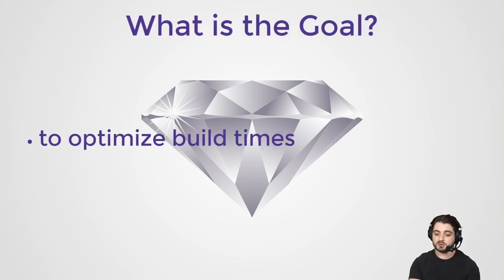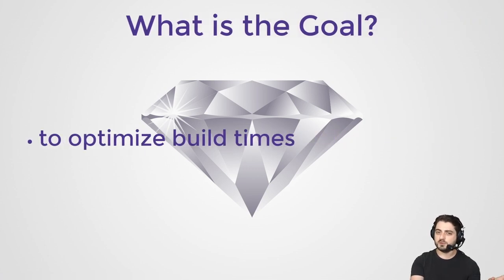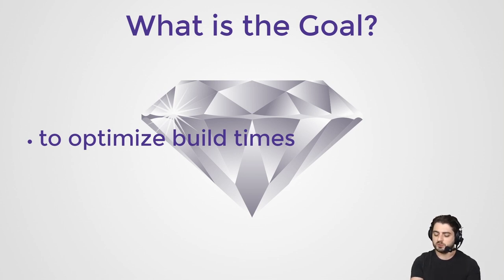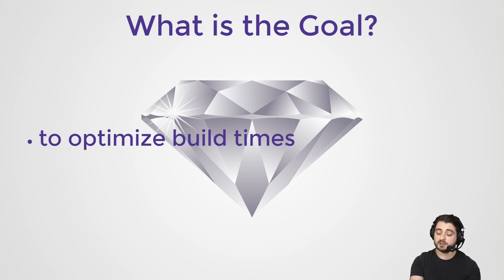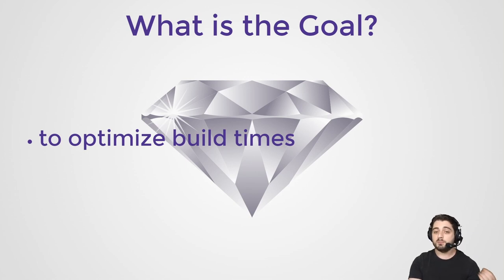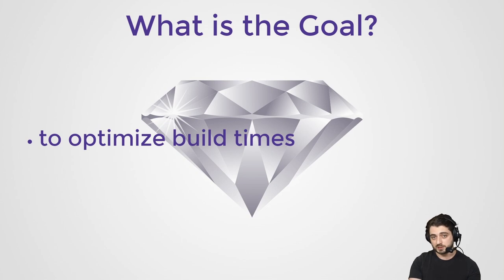The second slide was about the goal. I rubbed a couple of people the wrong way when I said I don't really know what architecture is for. Obviously that was a poor choice of words — I know what architecture is for. However, different architectures are optimized for different things, and this one is optimized for build times. If build times are not one of your concerns, then diamond architecture is not for you.